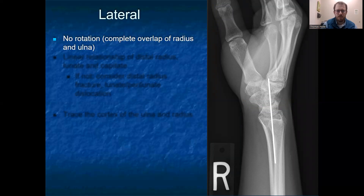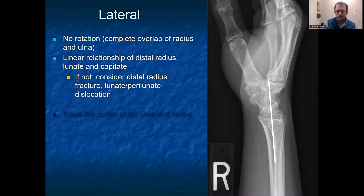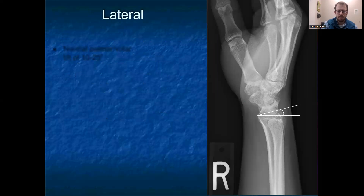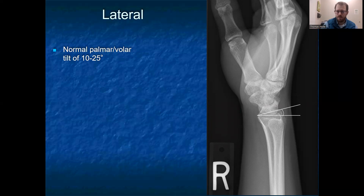Moving on to the lateral view: you should have no rotation, meaning the ulna and radius are completely overlapping. There should be a linear relationship of the distal radius to the lunate to the capitate. If not, consider either a distal radius fracture or a lunate or perilunate dislocation — lunate dislocation being a dislocation of the lunate from the distal radius, and perilunate being the capitate from the lunate more distally. Trace the cortex of the ulna and radius for subtle fractures. You can also assess the normal palmar or volar tilt of the distal radius, which should be 10 to 25 degrees.